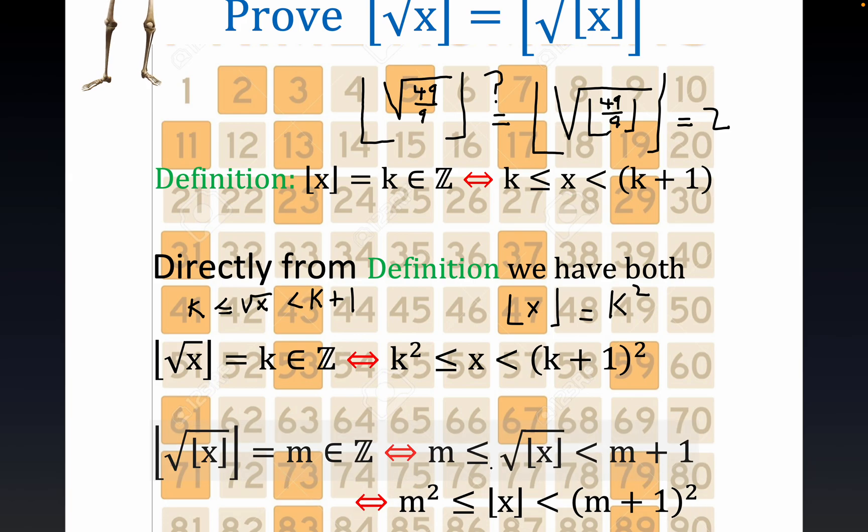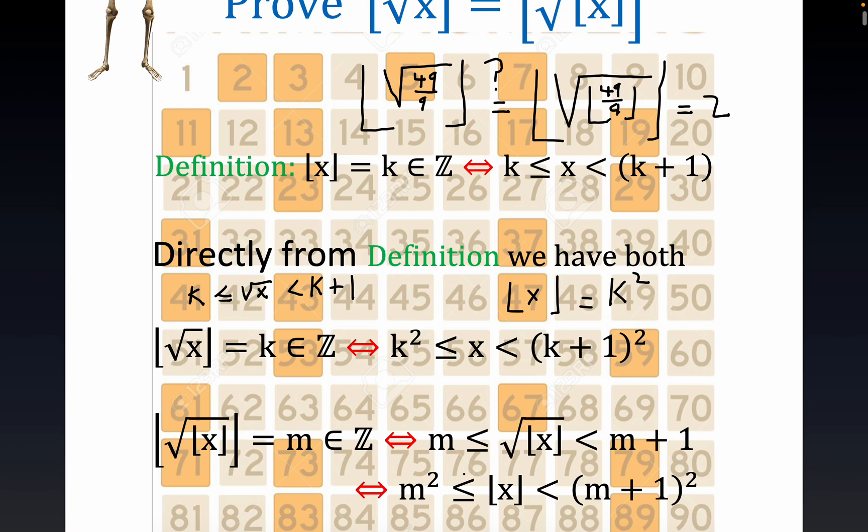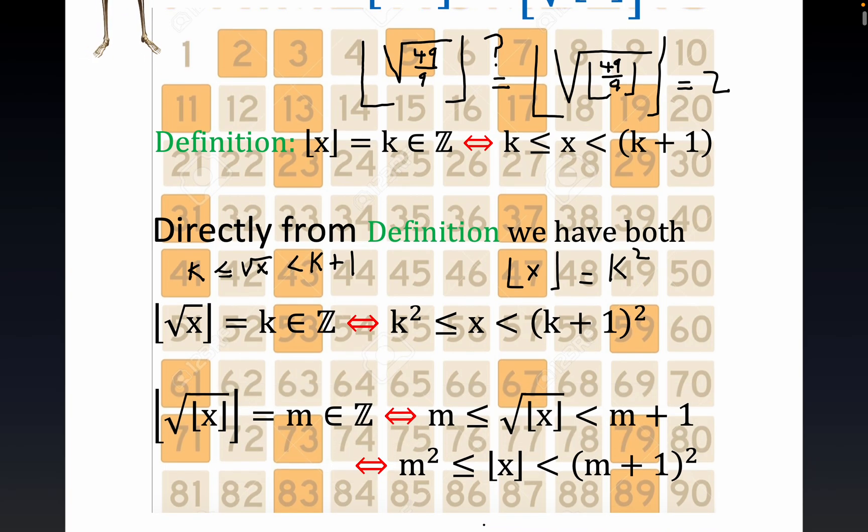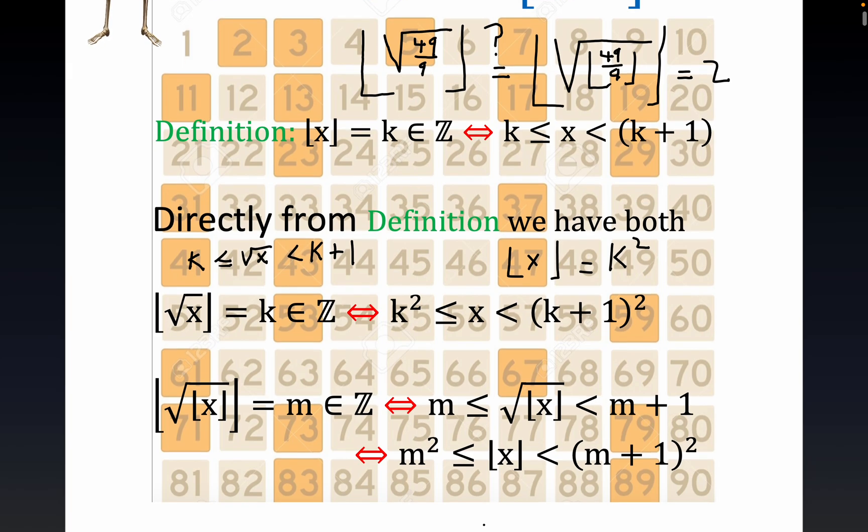Remember, you strip away the square brackets and you get this statement here. Again you can square both sides—the square function is increasing, or maybe not decreasing is the better way of saying it.